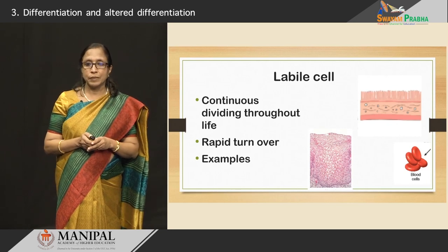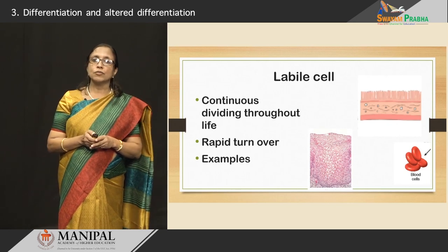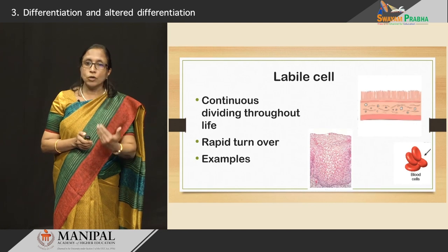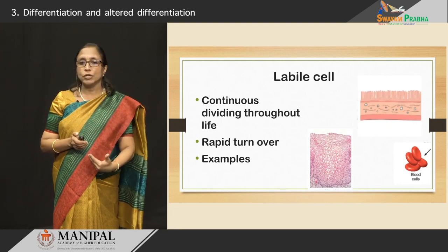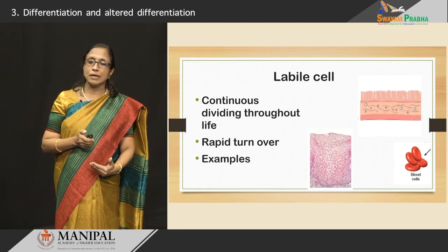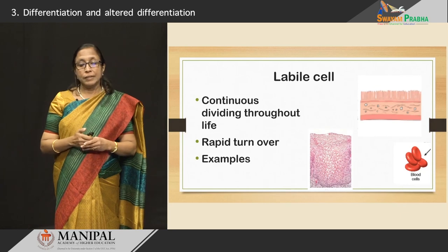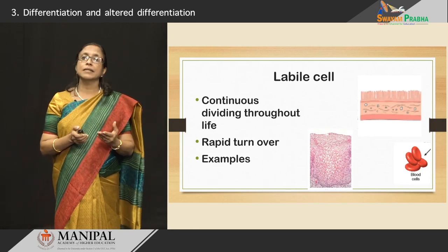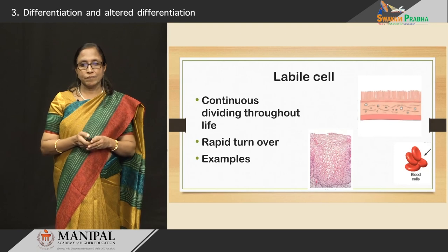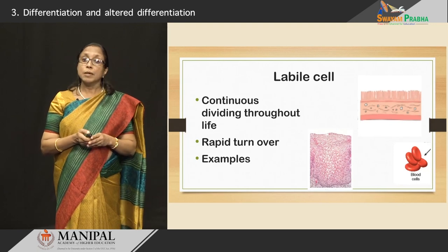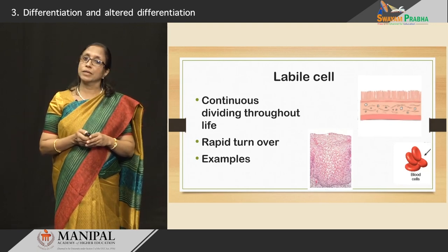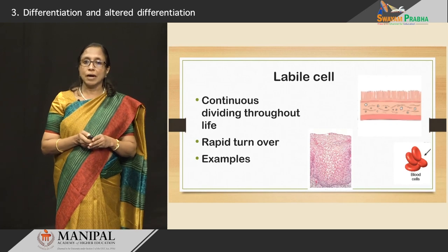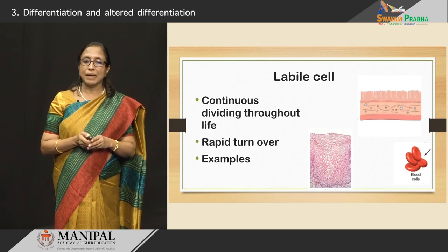Examples of labile cells include the cells of the skin, the cells of the oral cavity, the cells lining the gastrointestinal system all the way down, the cells in the secretory ducts, and the hematopoietic blood cells.